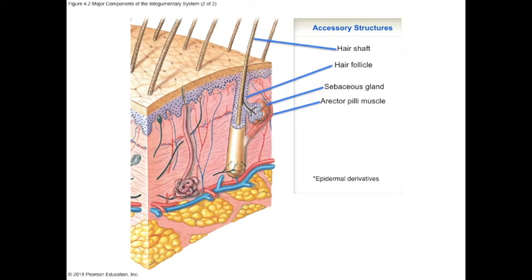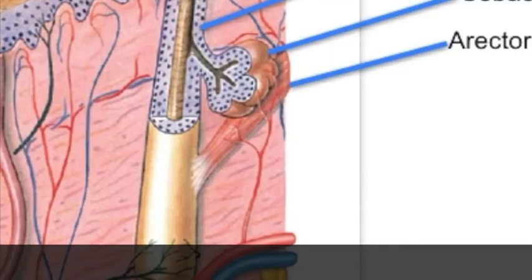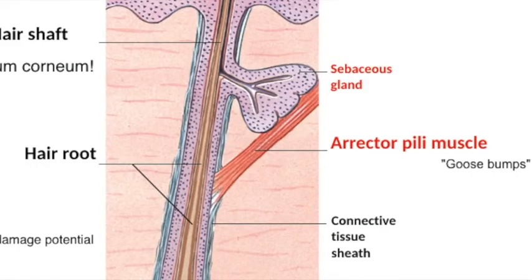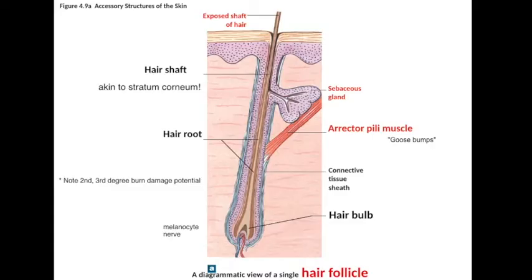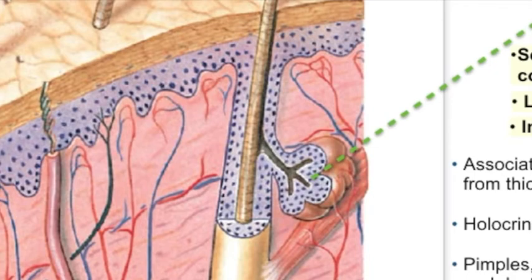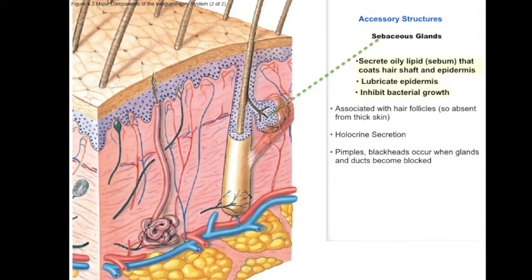Associated with each hair follicle is the arrector pili muscle, a strip of smooth muscle that contracts in response to fright or cold, pulling the hair upright. Sebaceous glands are also associated with hair follicles and secrete an oily substance that moisturizes skin and has antibacterial properties. These are holocrine glands — the entire cell, filled with lipids, lyses and its contents are secreted through the hair follicle to the skin surface. During puberty, sebaceous glands are highly active, and if ducts become blocked, inflammation leads to pimples and blackheads.